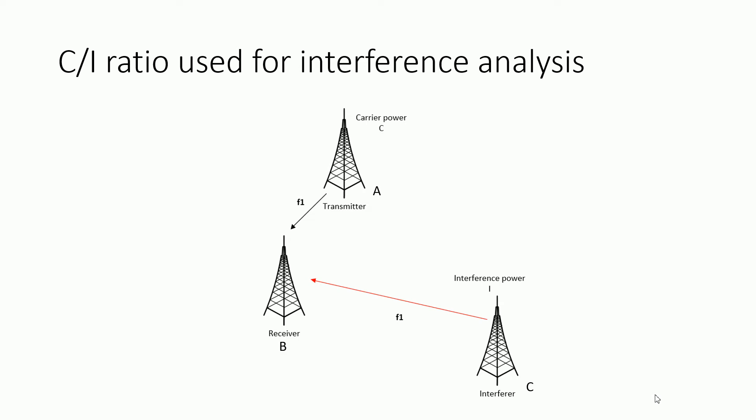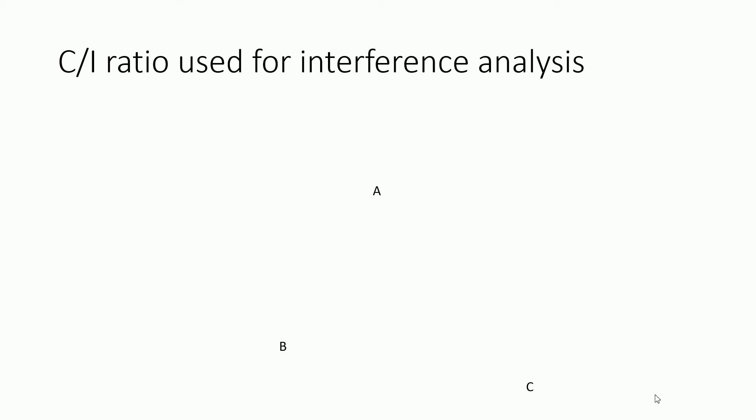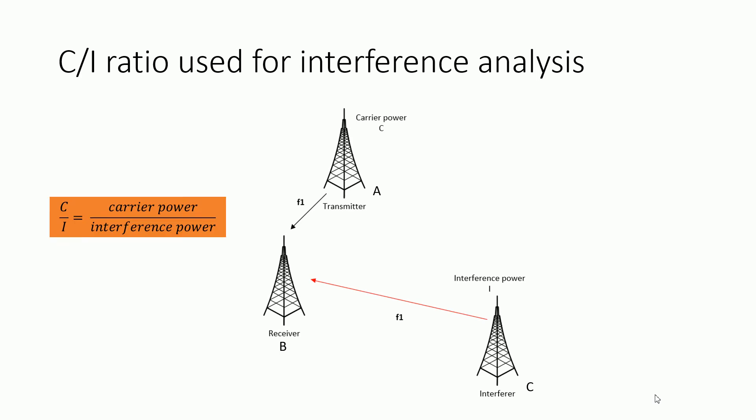It is important to understand the meaning of the C/I ratio. C means the carrier power — the carrier power is the wanted power, the power that you intend to receive. I is the power from the interference station, and this is undesirable — you have to eliminate this. There are various ways you can eliminate interference, as you will see at the end of the discussion.